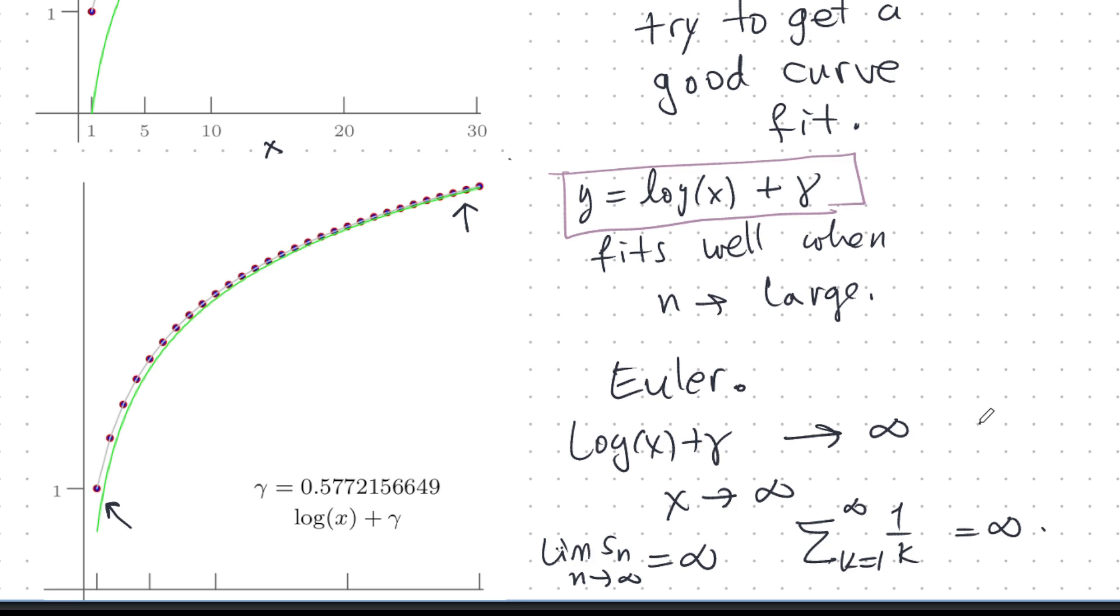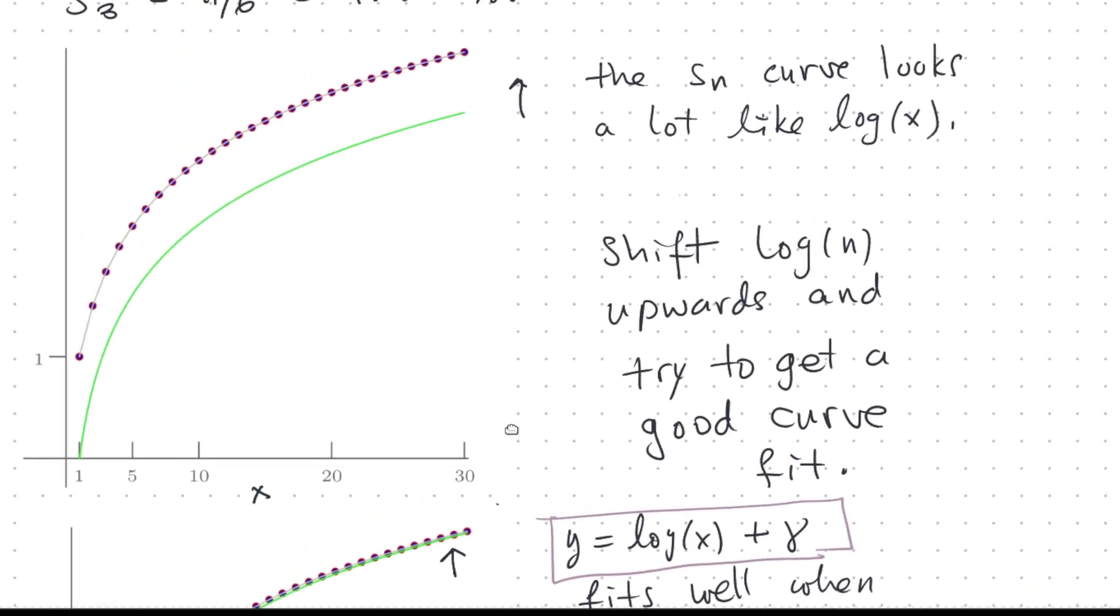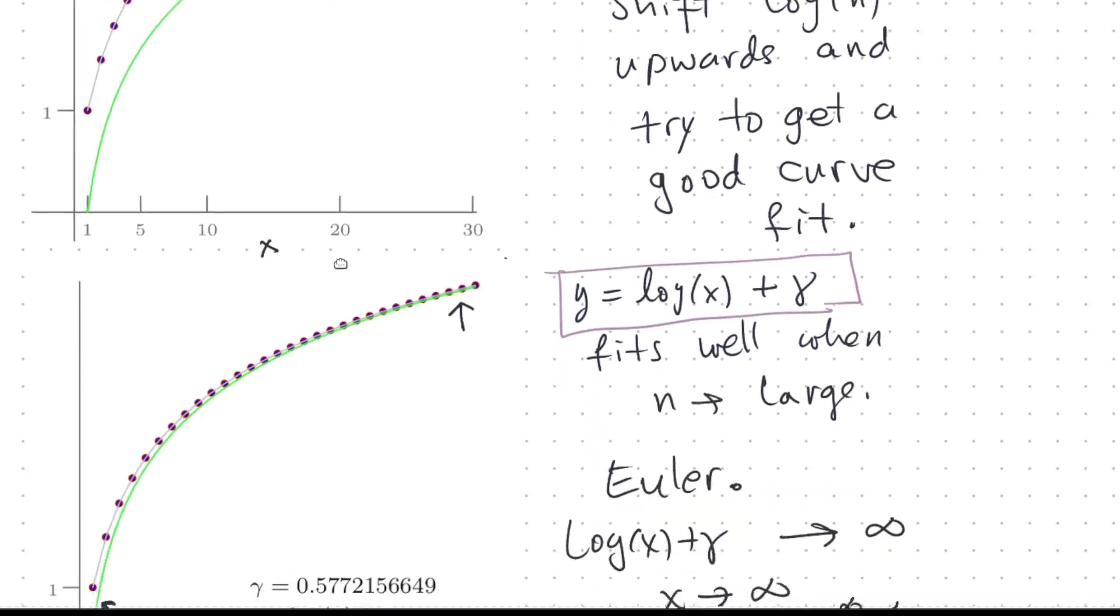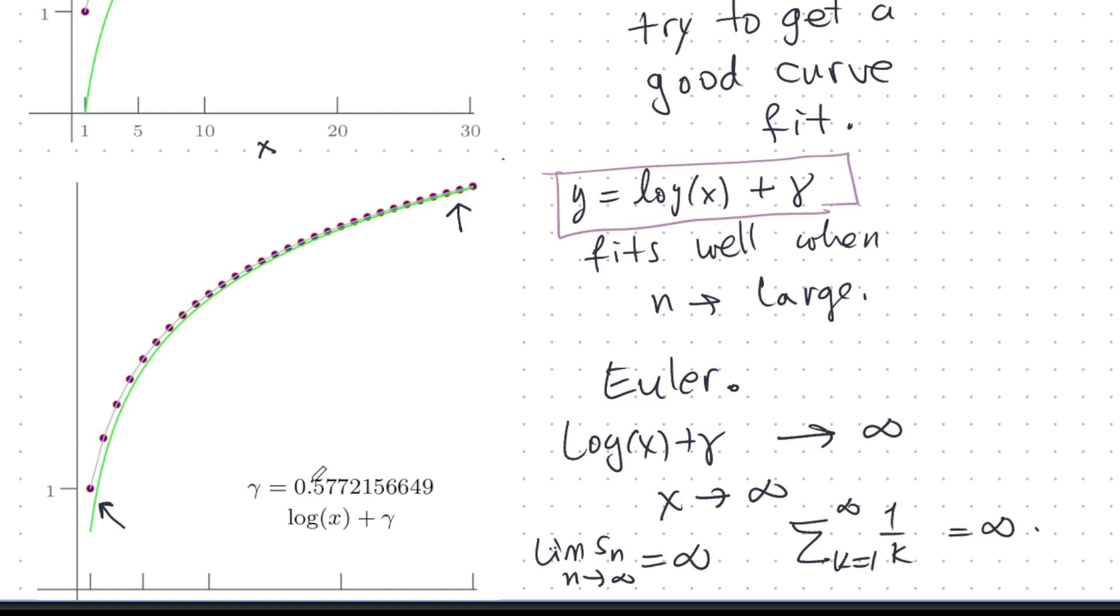We will prove all these things in a future video. Right now, I just want to give you this really nice picture. Keep this in mind. This is what gamma is. It's a very natural idea. I see these partial sums. I say to myself, that looks exactly or very much like log. But log is in the wrong place. So let me shift it up a bit. And I shift it up by adding 0.57721566. And I get a very good fit. That gets better and better and better. And that's gamma, the Euler-Mascheroni constant.